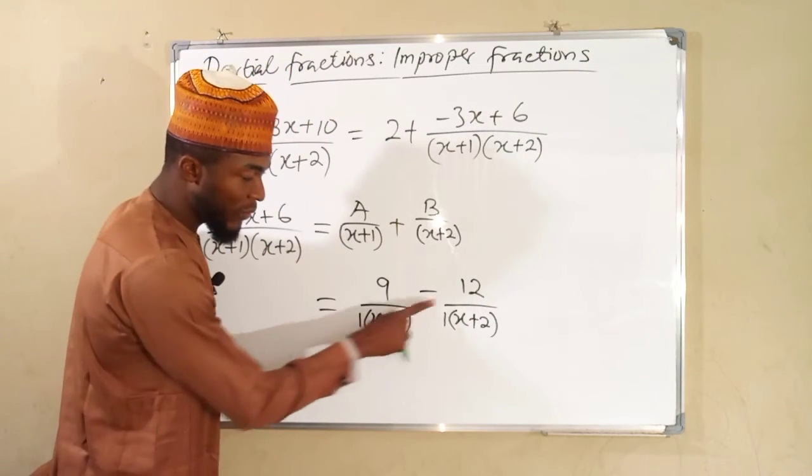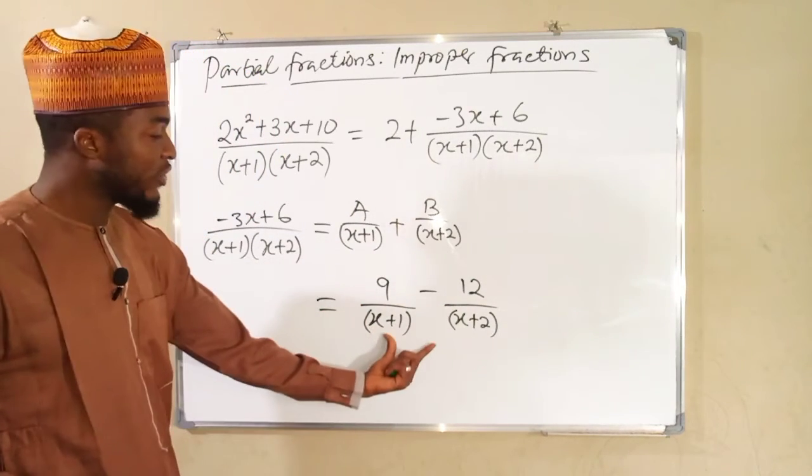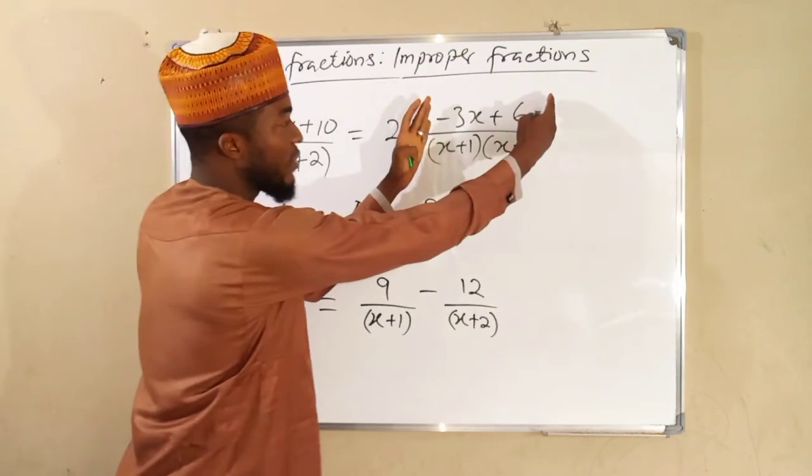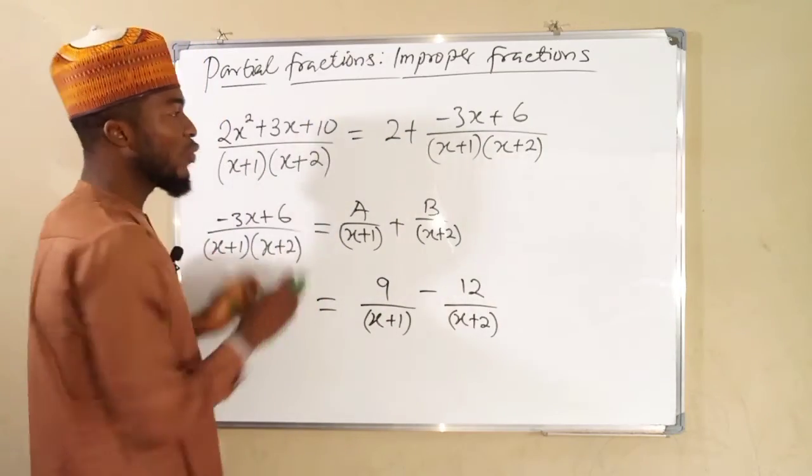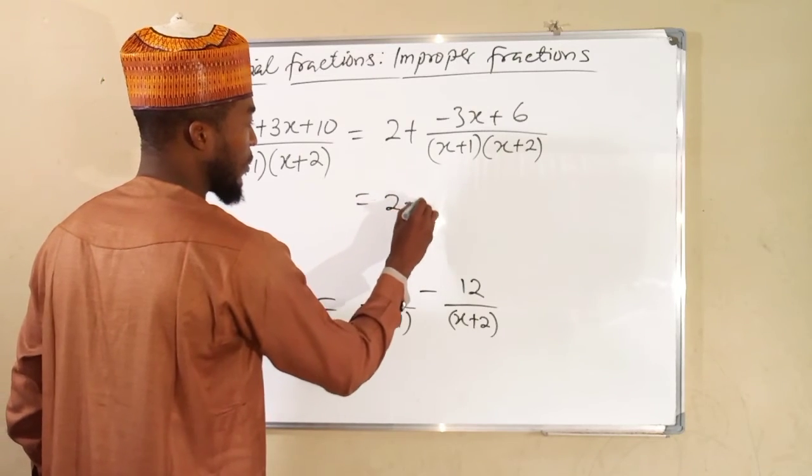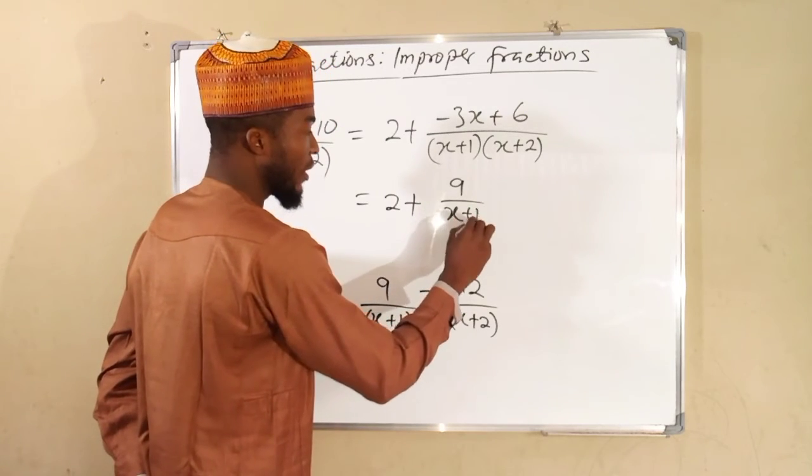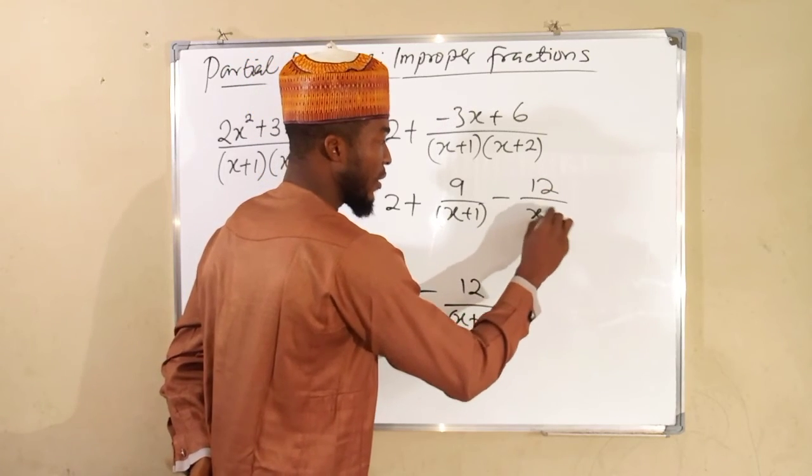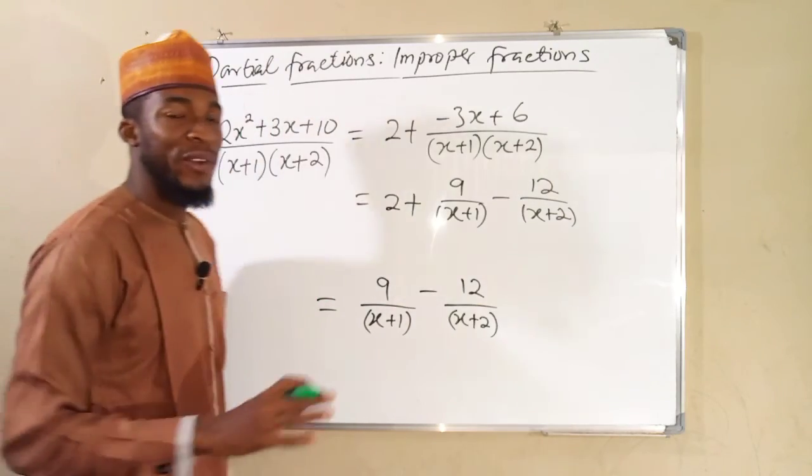And you know that these positive ones are not going to affect our factors. So we take them down. So this is the partial fraction of this compound fraction. But we are going to bring it here because it is the simplification of this. So finally, the partial fraction of this is going to be 2 plus we have 9 over x plus 1, then minus 12 over x plus 2, which are the partial fractions of this compound fraction.